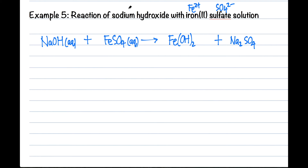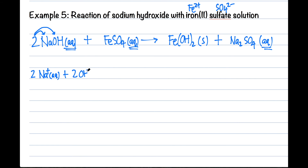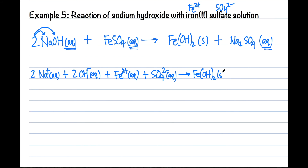Once the equation is balanced, we look for compounds with aqueous and split them into their ions. We have 2 sodium ions and 2 hydroxide ions from sodium hydroxide. Iron(II) sulfate gives Fe²⁺ and SO₄²⁻. Iron(II) hydroxide is a solid so we just copy it down. Sodium sulfate splits into 2 Na⁺ and SO₄²⁻. Now let's cancel the spectator ions and write the final ionic equation.